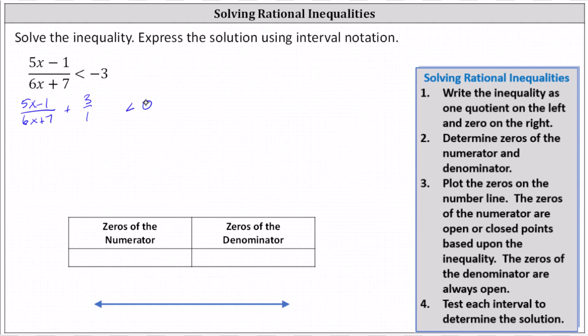Now we need to add these terms by obtaining the least common denominator, which is the quantity six x plus seven. This means we multiply three divided by one by the quantity six x plus seven divided by the quantity six x plus seven. Notice we now have a common denominator of six x plus seven, and the numerator is five x minus one plus three times the quantity six x plus seven.